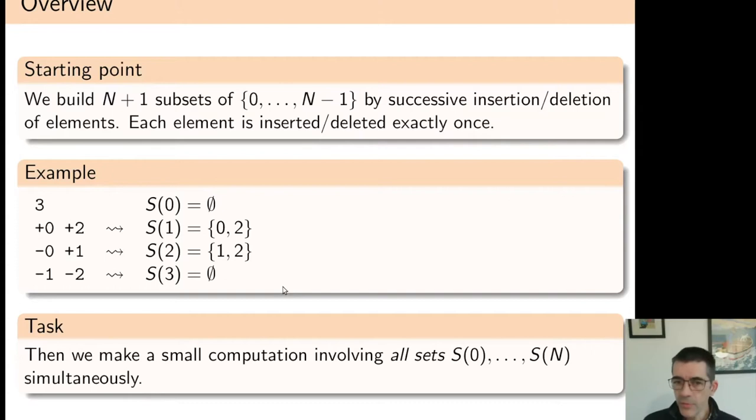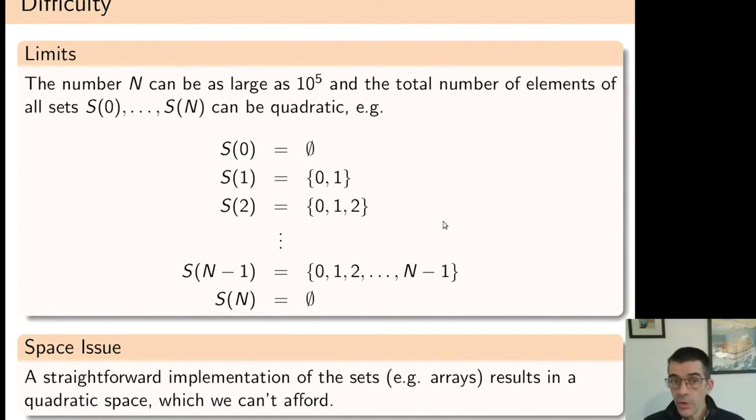The point is that we have to make a small computation that involves all the sets simultaneously. N can be large, and the total number of elements in all the sets can be quadratic.